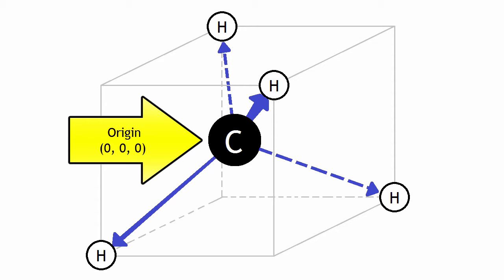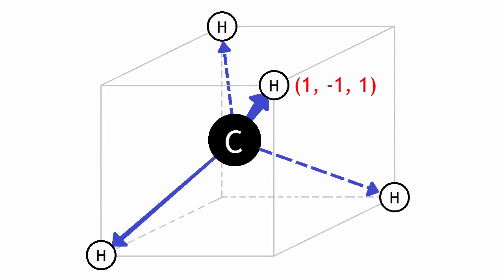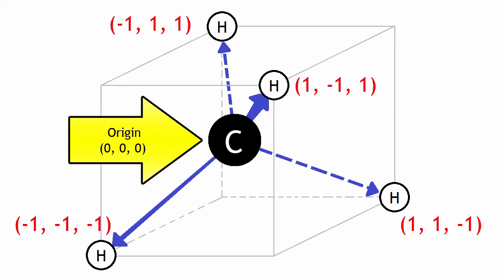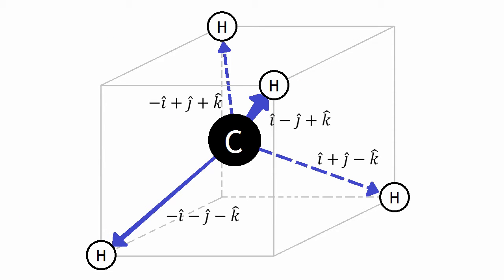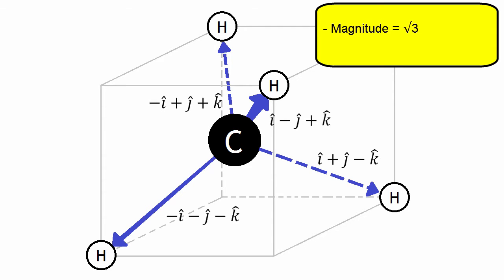With the carbon atom at the origin (0, 0, 0), the four hydrogen atoms have coordinates (1, −1, 1), (−1, 1, 1), (1, 1, −1), and (−1, −1, −1). These give each hydrogen atom a position vector with respect to the central carbon. All four vectors have the same magnitude of √3, and they do cancel each other out — and figuring out the vectors this way is much simpler than before.